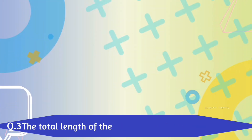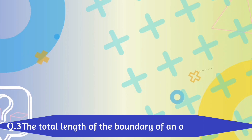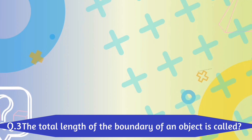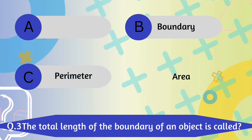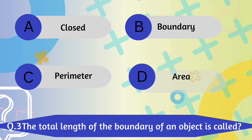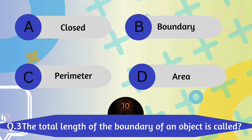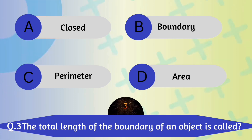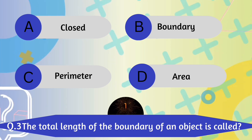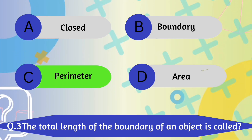Question number 3. The total length of the boundary of an object is called? A. Closed. B. Boundary. C. Perimeter. D. Area. Perimeter is the correct answer.